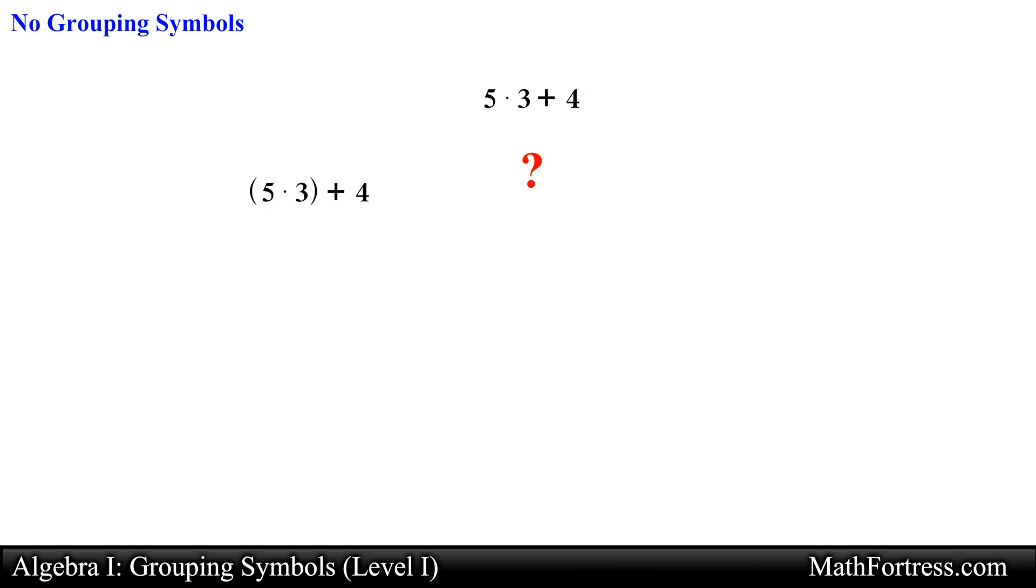Say we have the expression 5 times 3 plus 4. How would you simplify this expression? One student might group 5 and 3, and multiply first, then add 4, they would obtain an answer of 19.